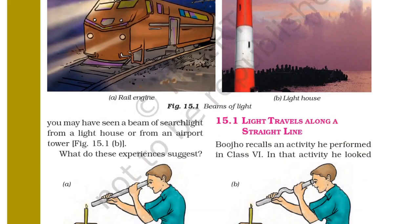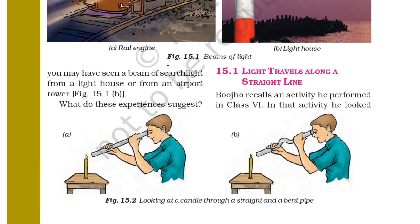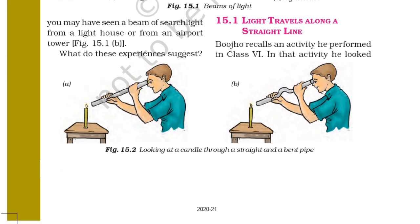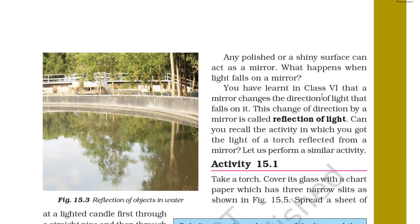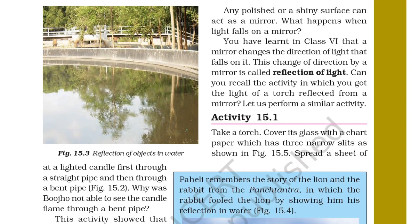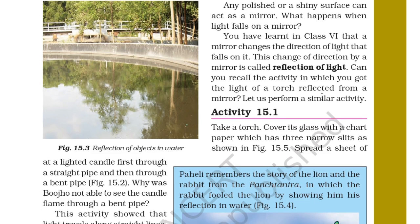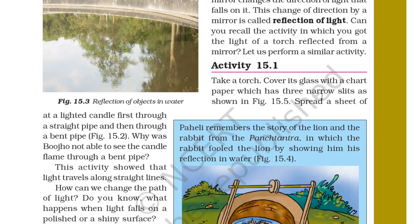We will see that in section 15.1, light travels along a straight line. Here you can see someone looking at a candle through a straight pipe and a bent pipe. Bojo recalls an activity from Class 6 where he looked at a lighted candle first through a straight pipe and then through a bent pipe. He was not able to see the candle flame through the bent pipe. This activity showed that light travels along a straight line.